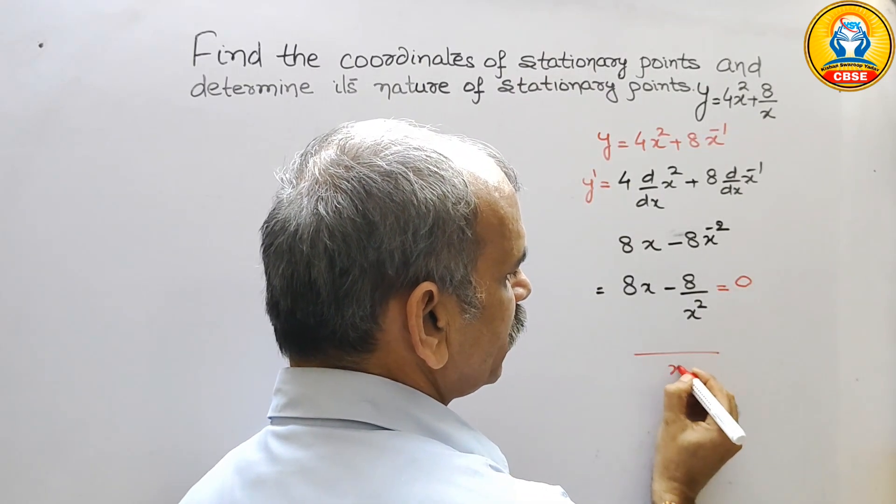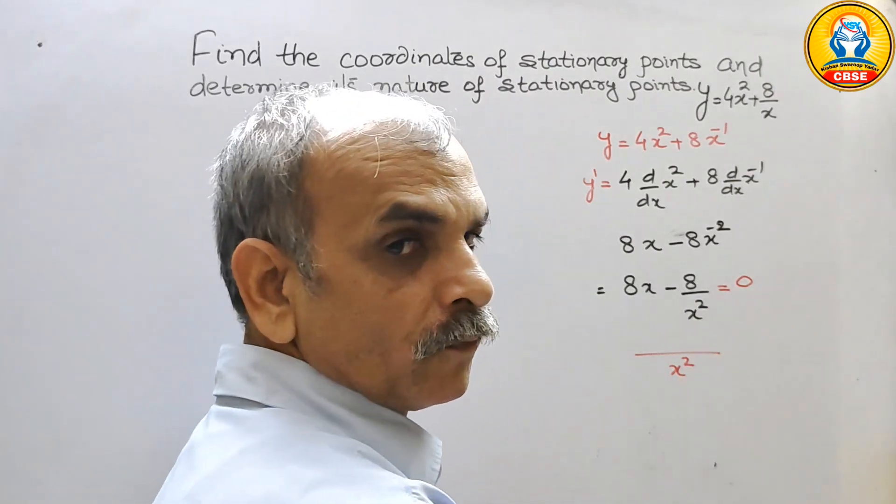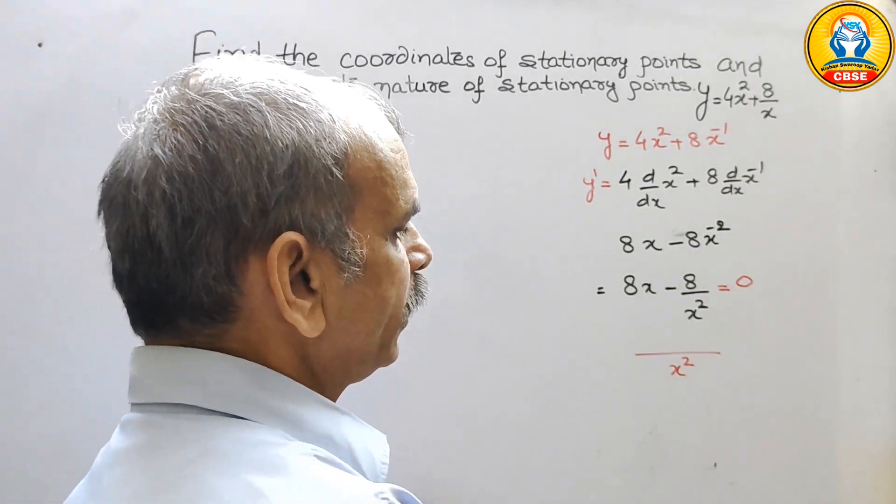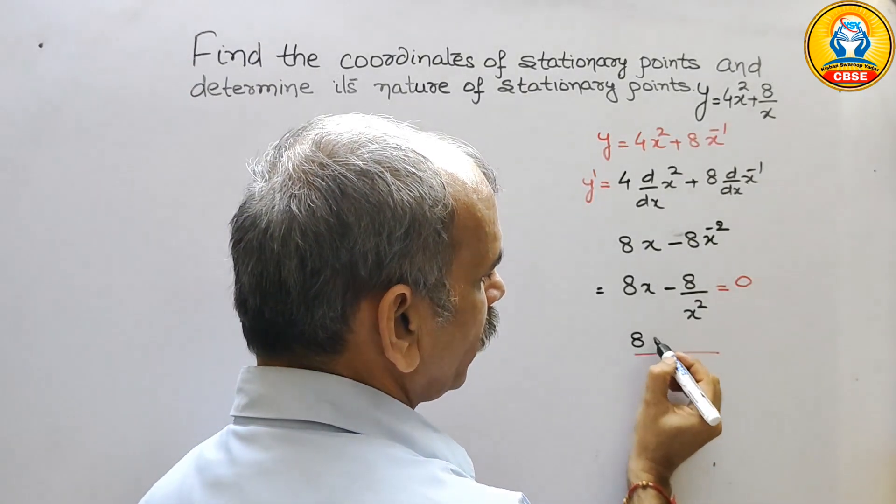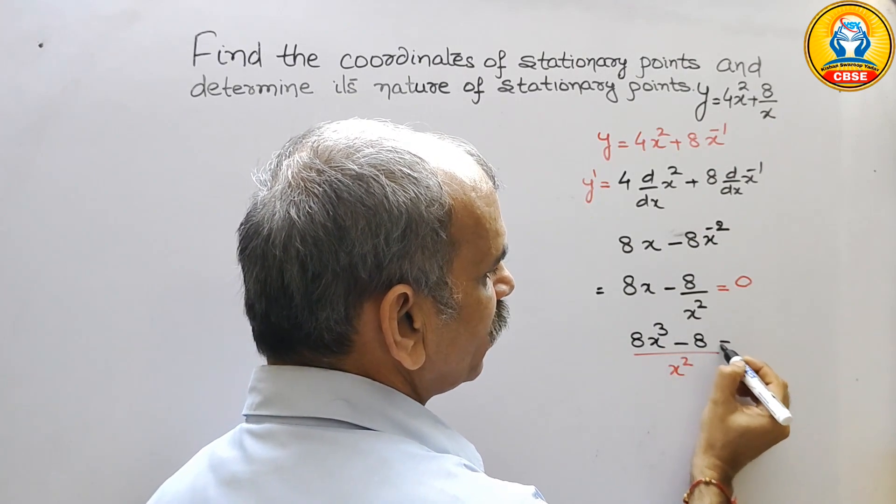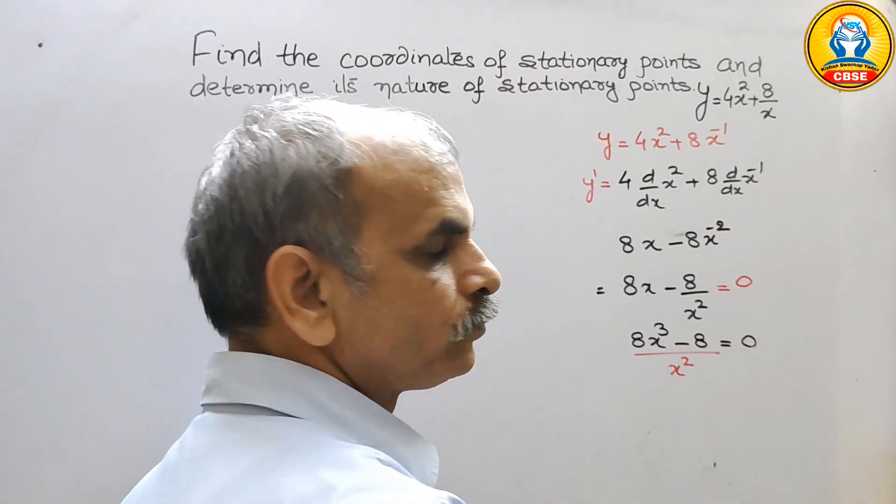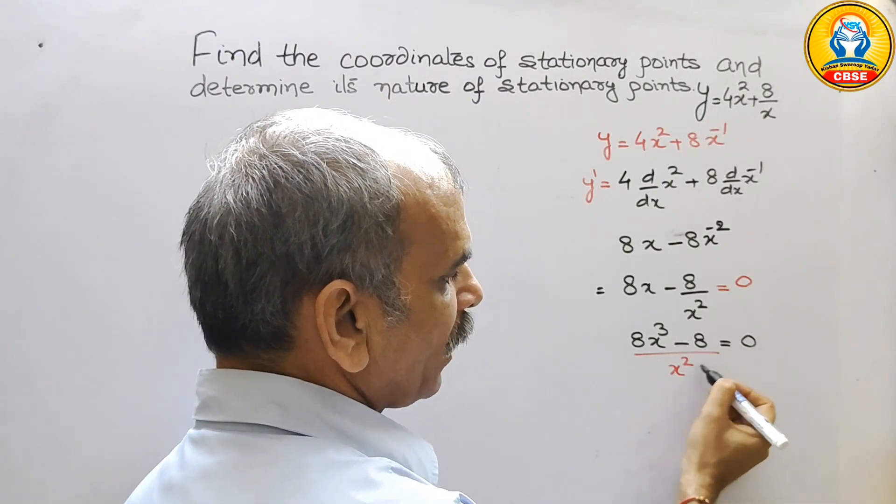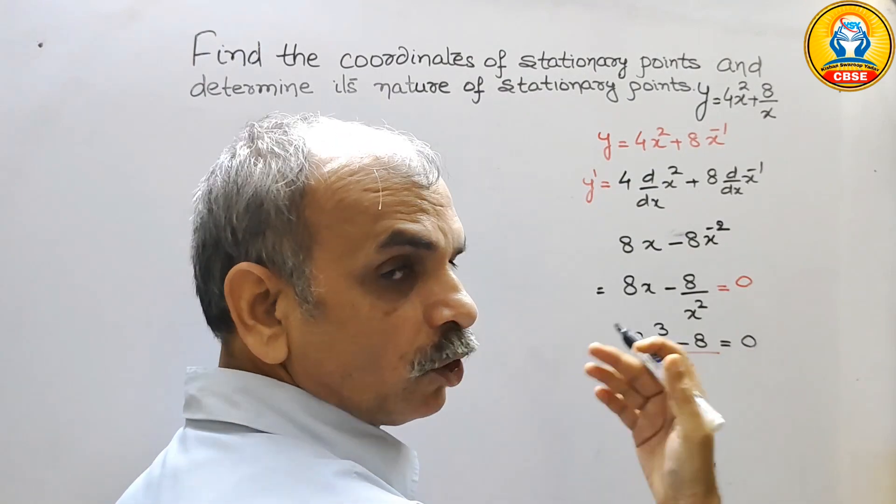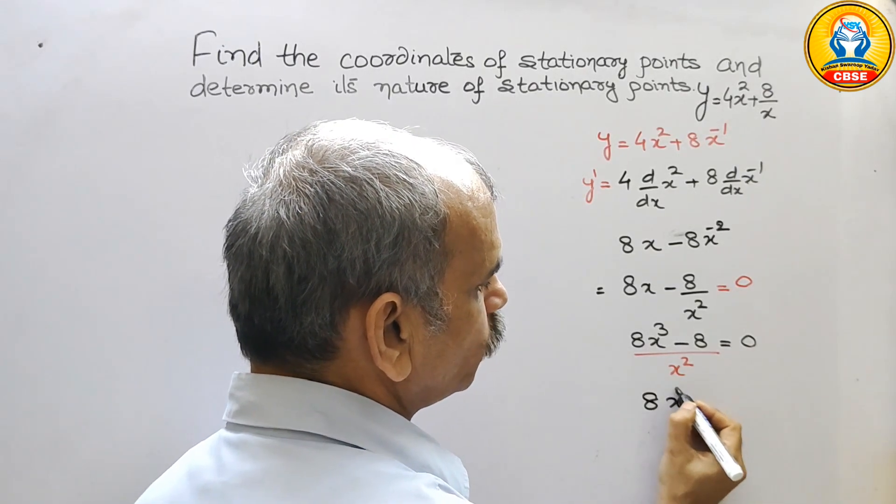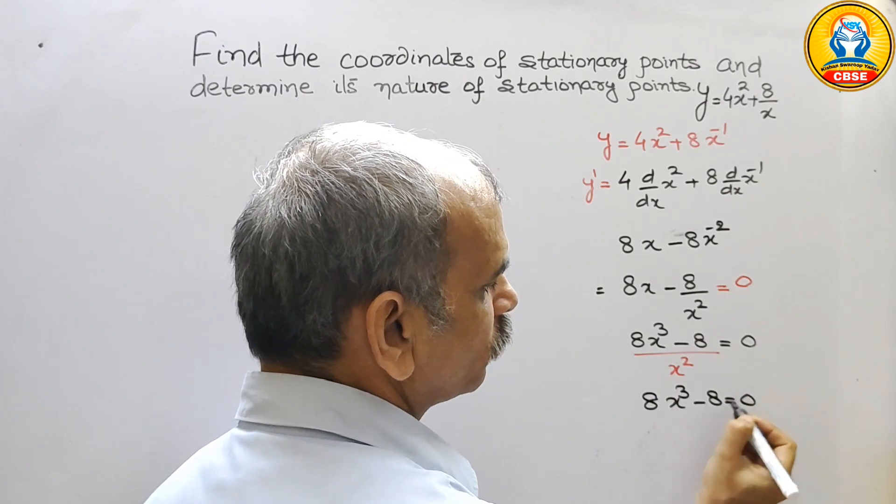Now take the LCM, LCM is x square. So here we will get 8x cube minus 8 that will give you 0. Now cross multiply this x square into 0 is 0. Therefore we will get the equation 8x cube minus 8 that is equal to 0.